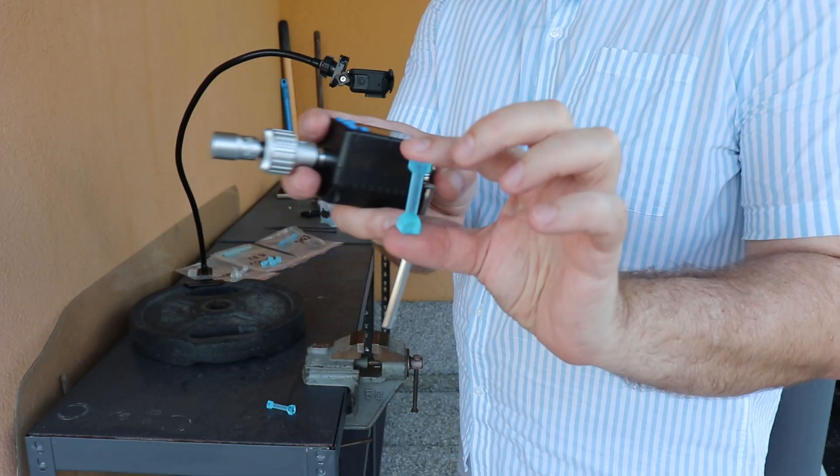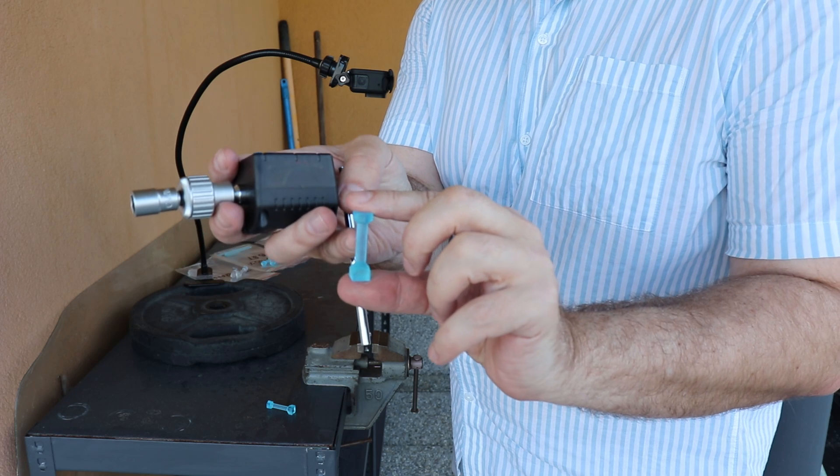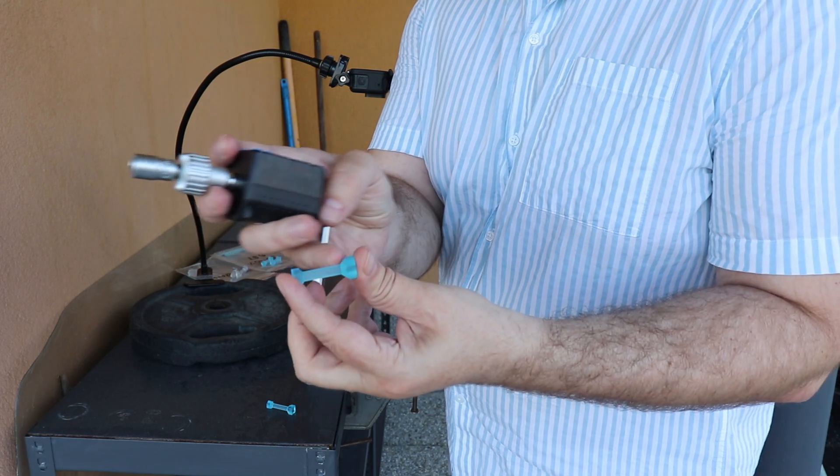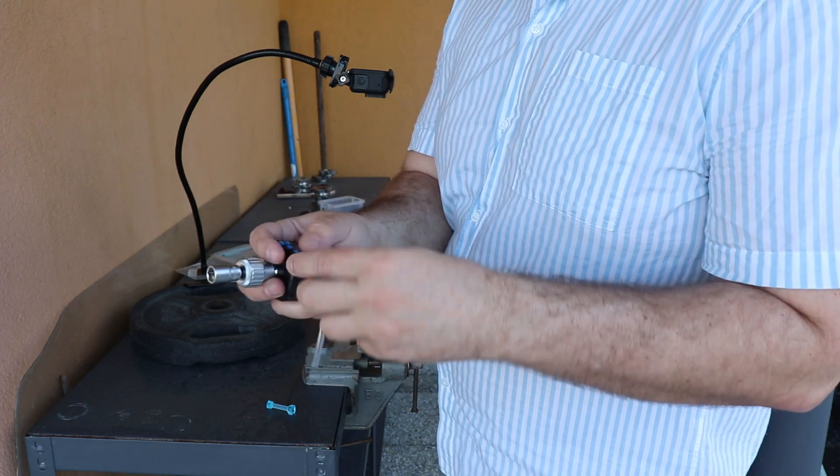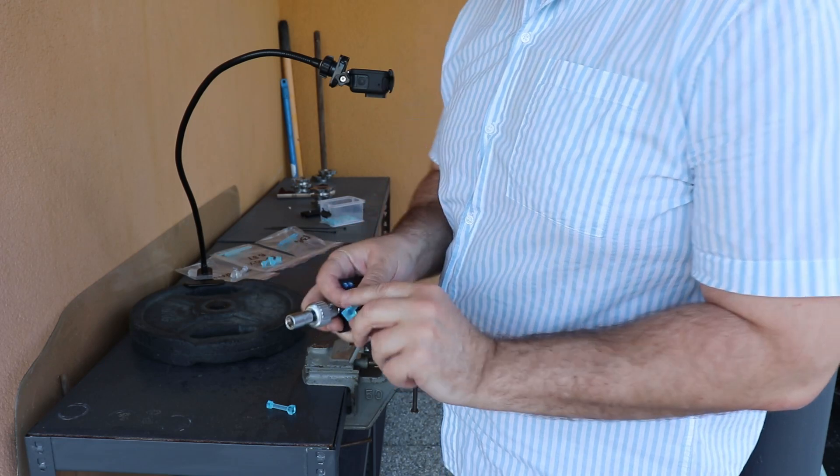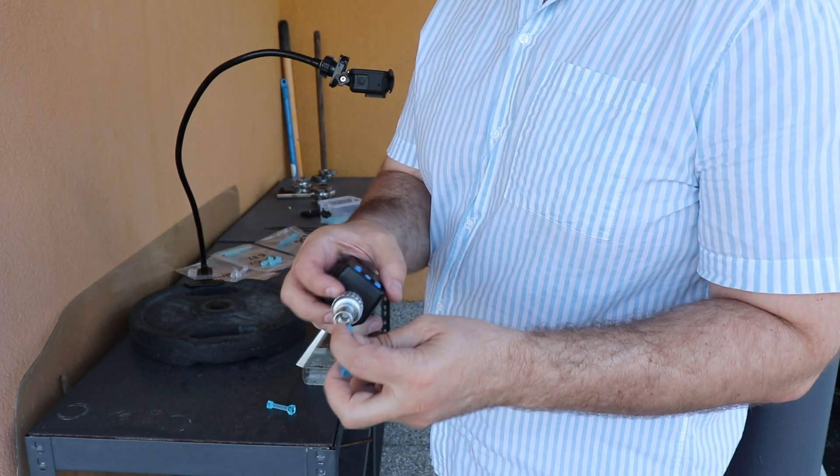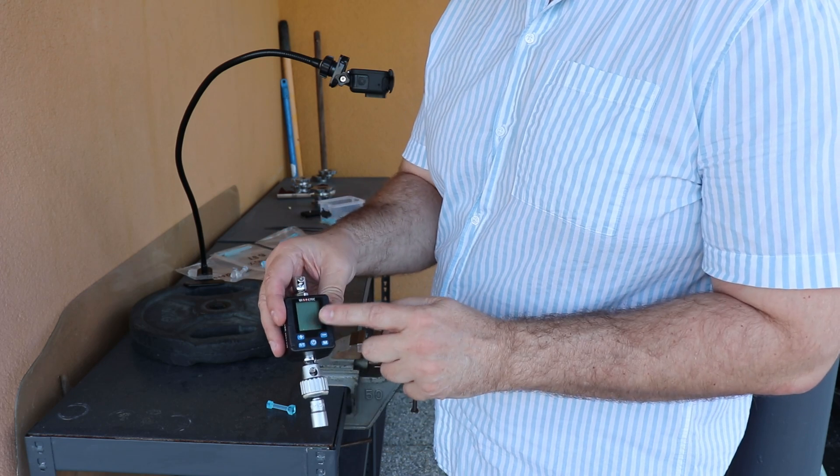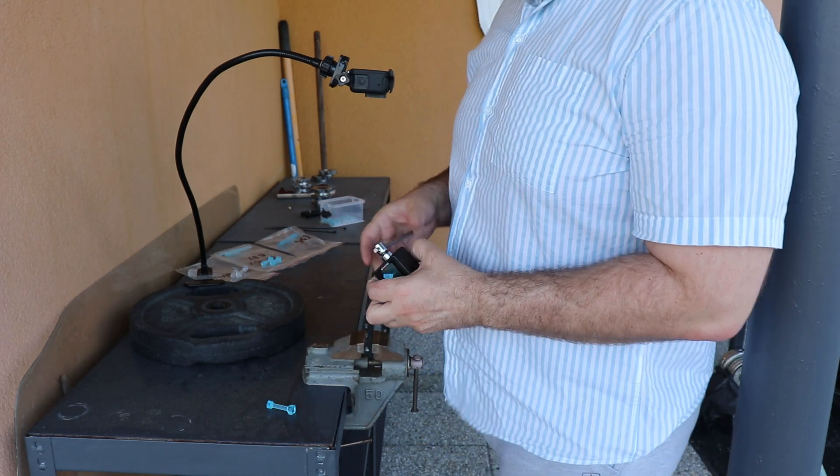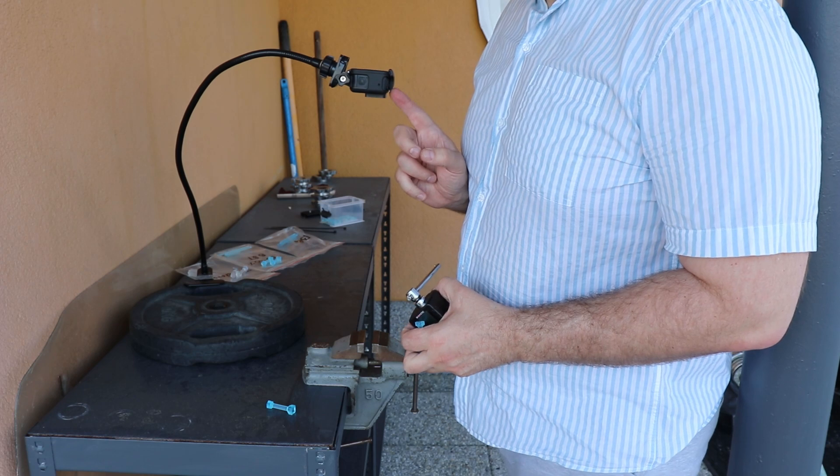In this torque test I am using this 6mm diameter test specimen, and the length of the cylindrical part is 30mm. This side goes into the vise, and the other side goes into 10mm wrench. And I will measure the torque with this torque meter, and also I will follow the deformation with this upper camera here.